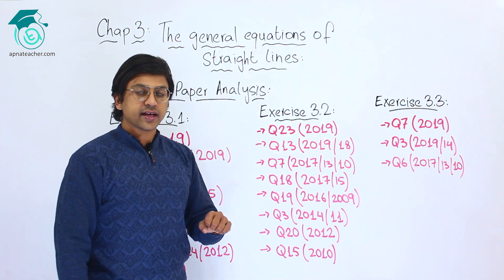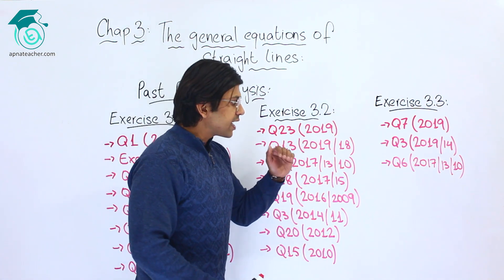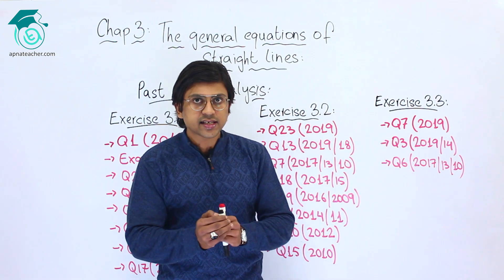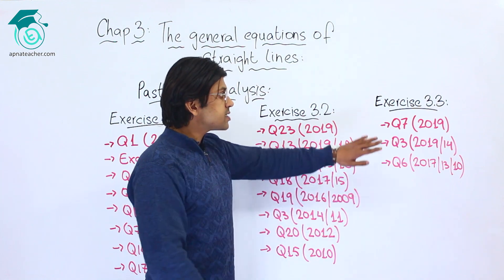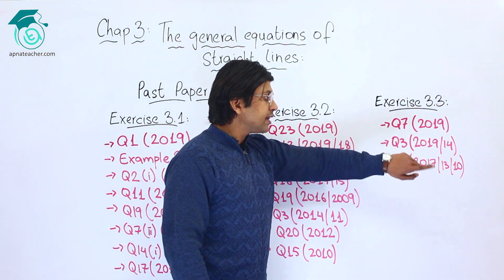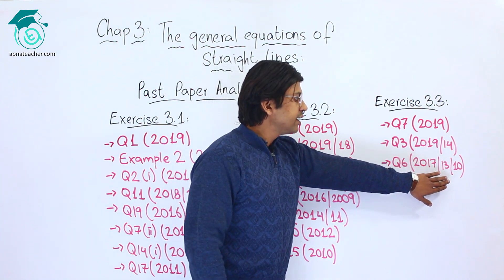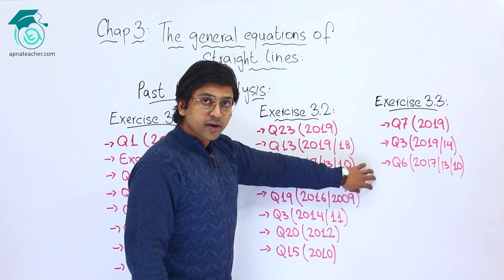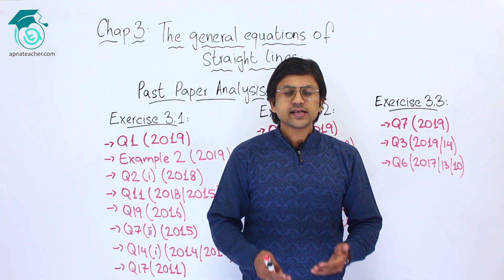Exercise 3.3, as compared to exercises 3.1 and 3.2, is a smaller exercise. In the last 10 years, only 3 questions have been asked from Exercise 3.3. Question number 7 in 2019, question number 3 in 2019 and 2014, and question number 6 in 2017, 2013, and 2010. As you can see, the most frequently asked question from Exercise 3.3 is question number 6.